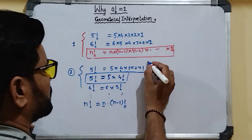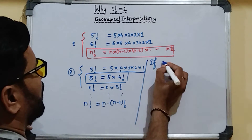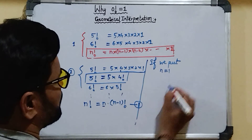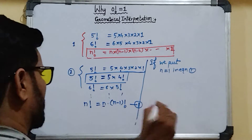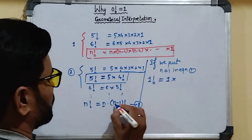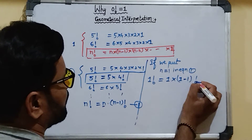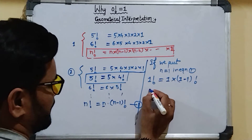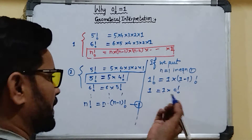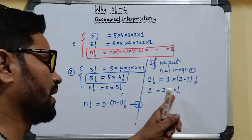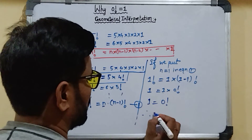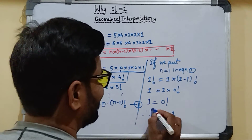Now, if we put n = 1 in the equation n! = n × (n−1)!, then we get: 1! = 1 × (1−1)! = 1 × 0!. Since the value of factorial 1 is equal to 1, we have: 1 = 1 × 0!, which means 1 = 0!. Therefore, factorial 0 is equal to 1, and this is the proof.